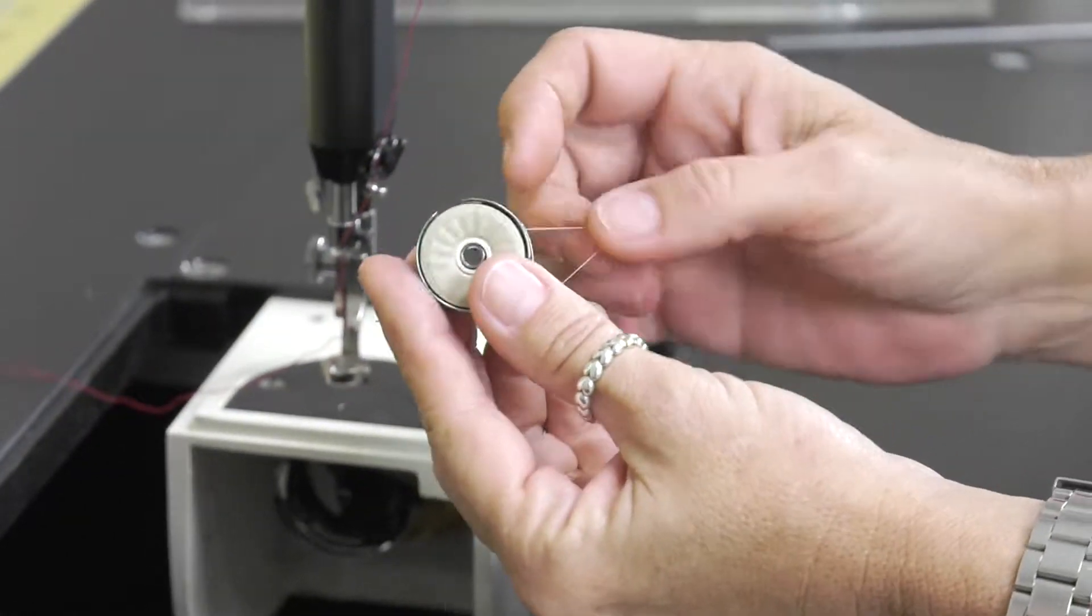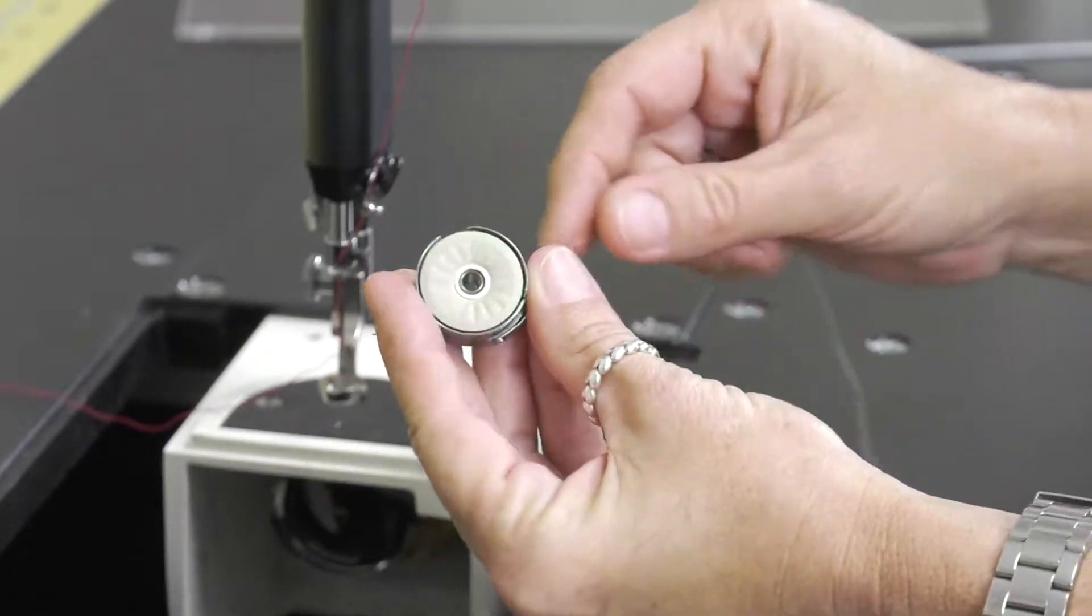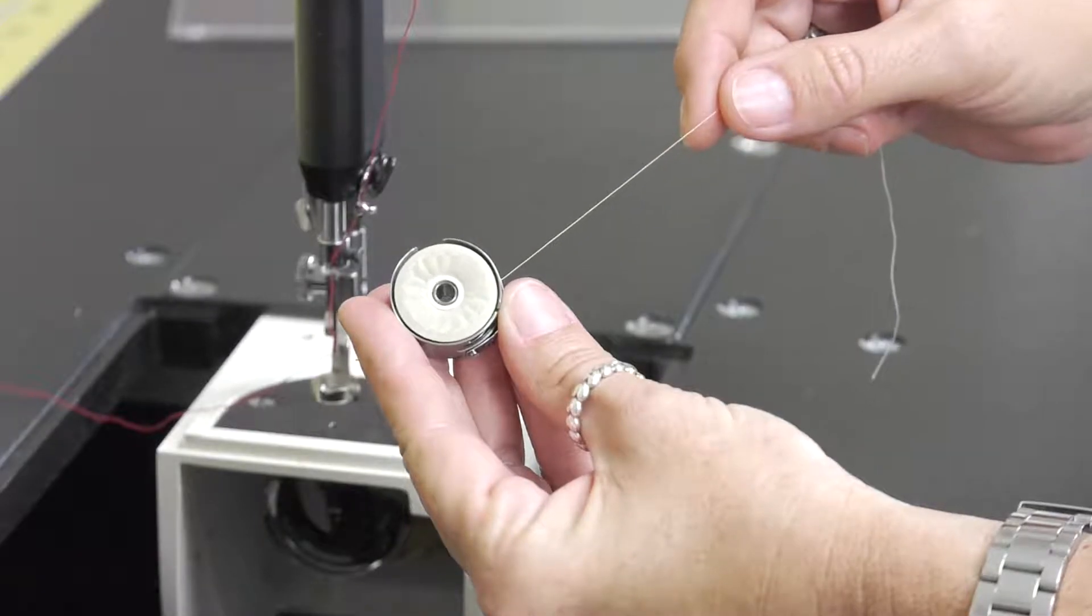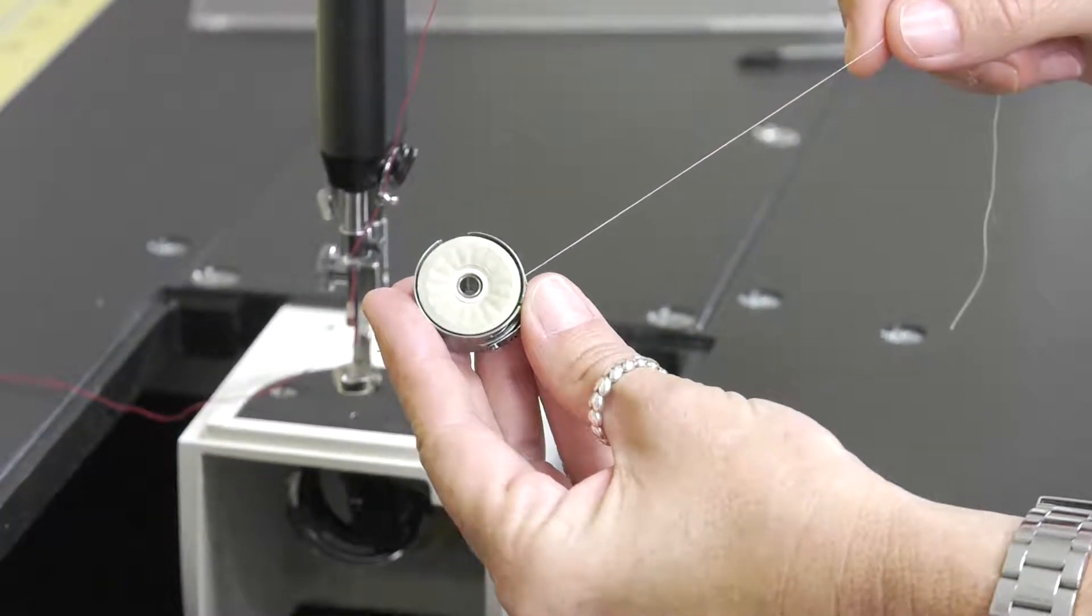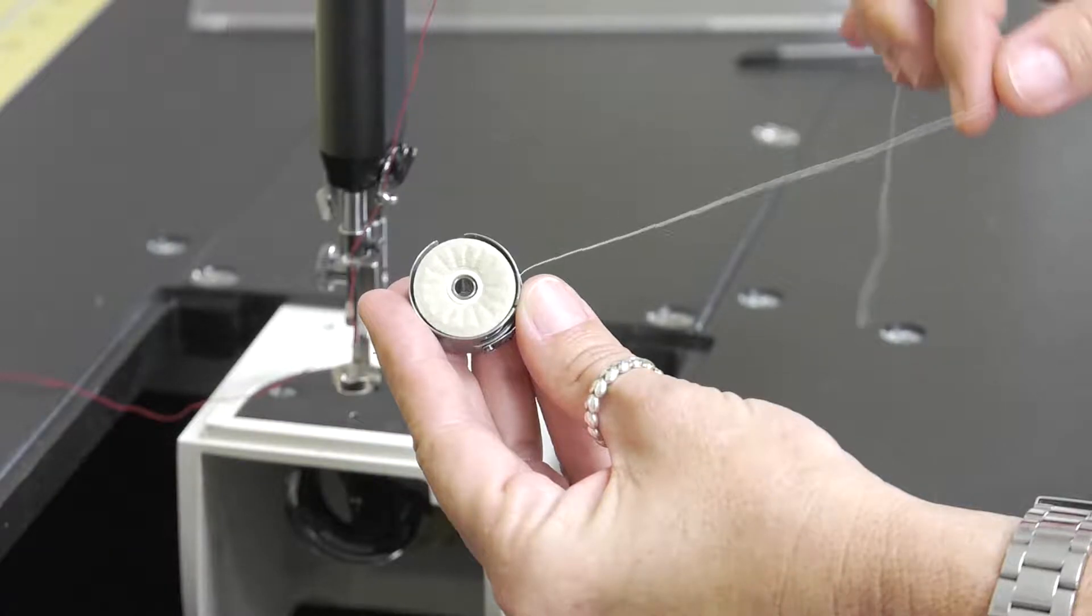Our bobbins, when inserted properly, and you pull the tail, the string that's sticking out, that bobbin should spin counterclockwise. We don't want it to go clockwise.